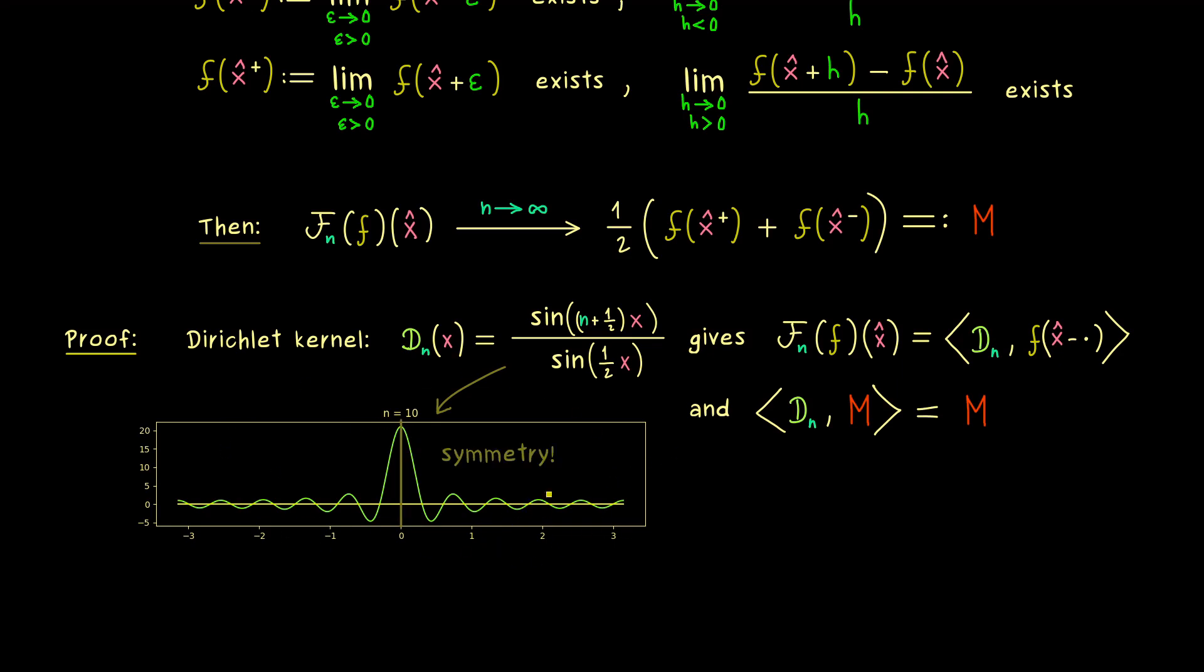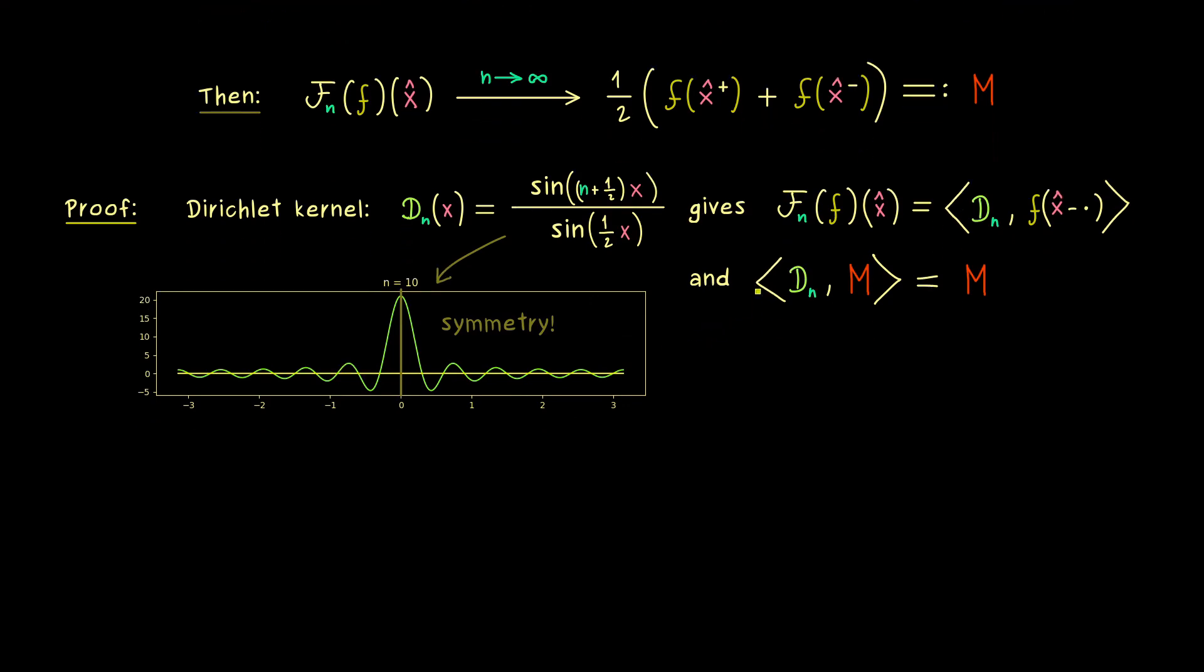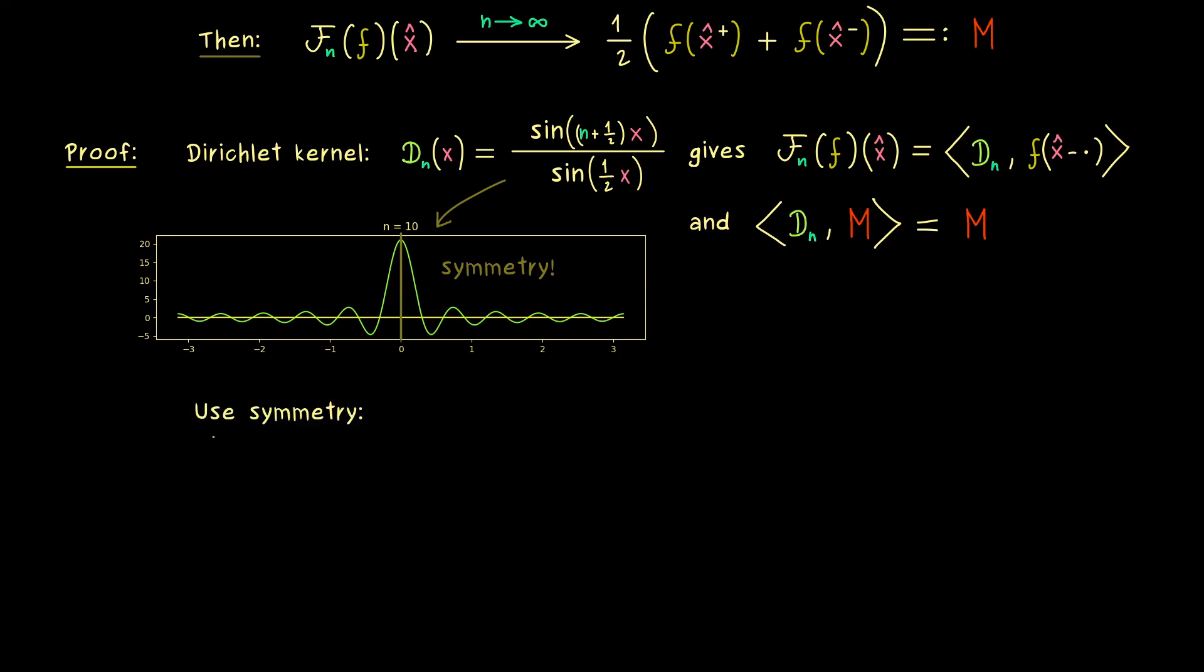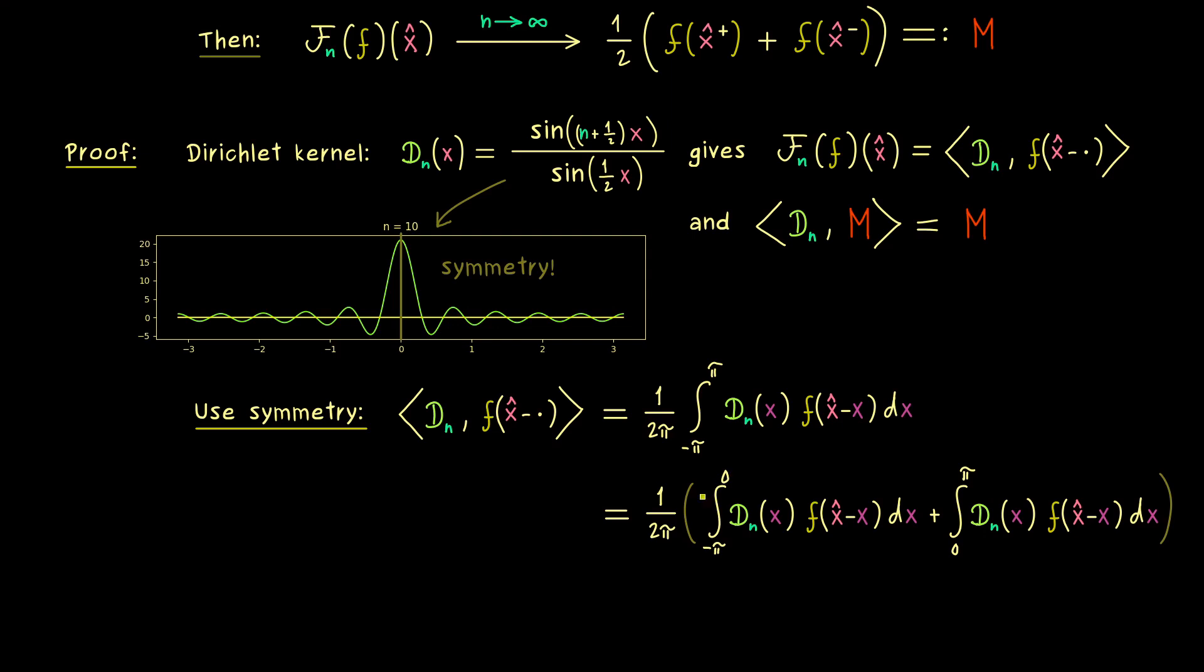And exactly this symmetry we can use to make our life a little bit simpler when we want to calculate this inner product. So you might already guess instead of the integral from minus π to plus π we can just take two times the integral from zero to π. So let's see how we can manage that because we have to transform a little bit. So first we have our integral from minus π to plus π and we integrate with respect to x. Hence as already mentioned we can split that up into two parts.